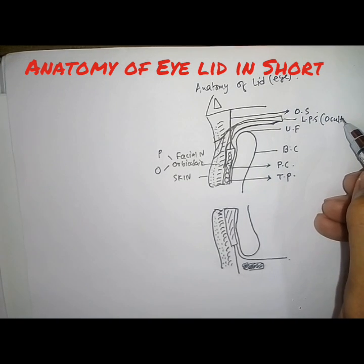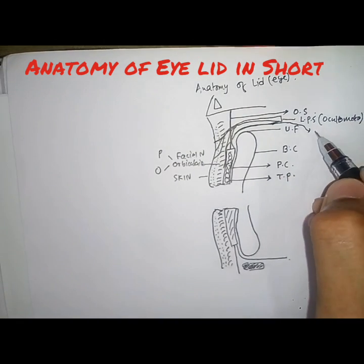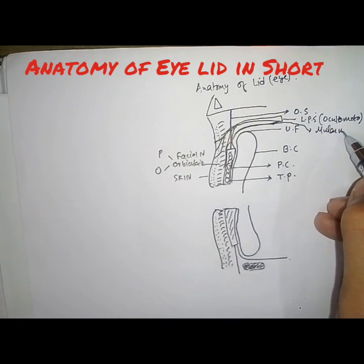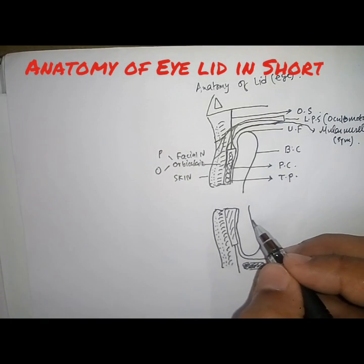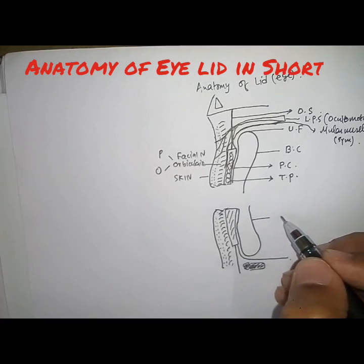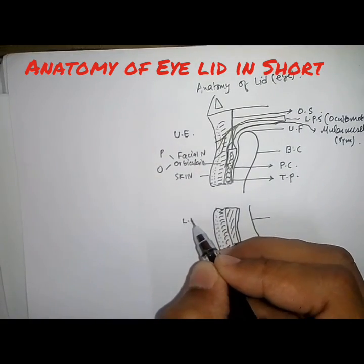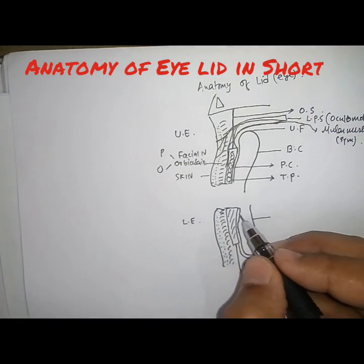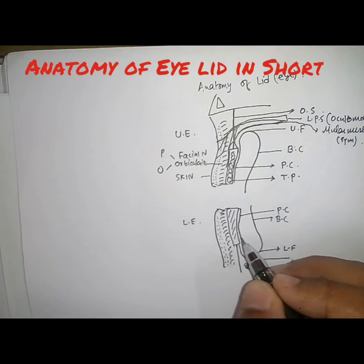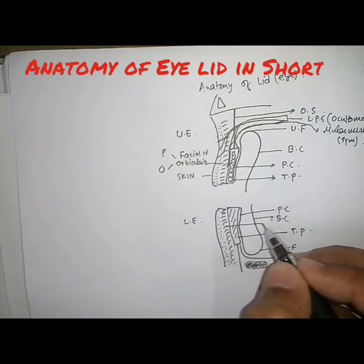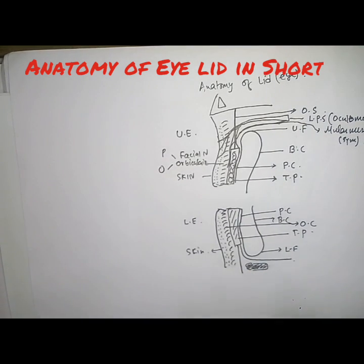Müller's muscle is supplied by the sympathetic nerve. Similarly, in the lower eyelid: the palpebral conjunctiva, the lower fornix, the tarsal plate, the orbicularis muscle, and the skin — the same structures as in the upper eyelid.